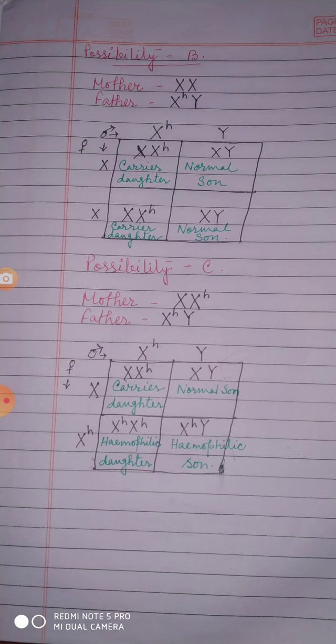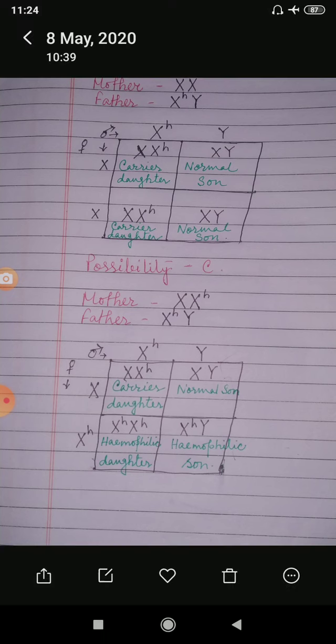Now, possibility C: a mother has one X with normal capital H and one X with hemophilic small h, and a father with X with hemophilic small h and one Y. The combinations here are: a carrier daughter, a normal son, a hemophilic daughter, and a hemophilic son.